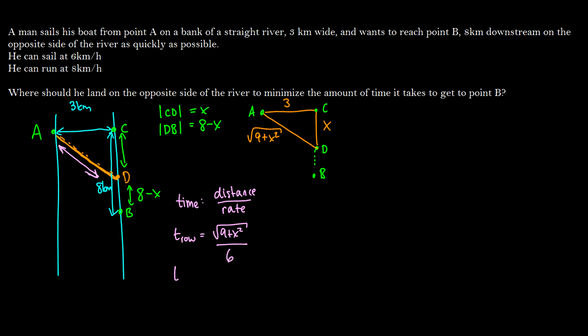And of course, we have the T of running, and he has to run 8 minus X kilometers, and he can do that at 8 kilometers per hour. So the total time is going to end up being both of these added together.